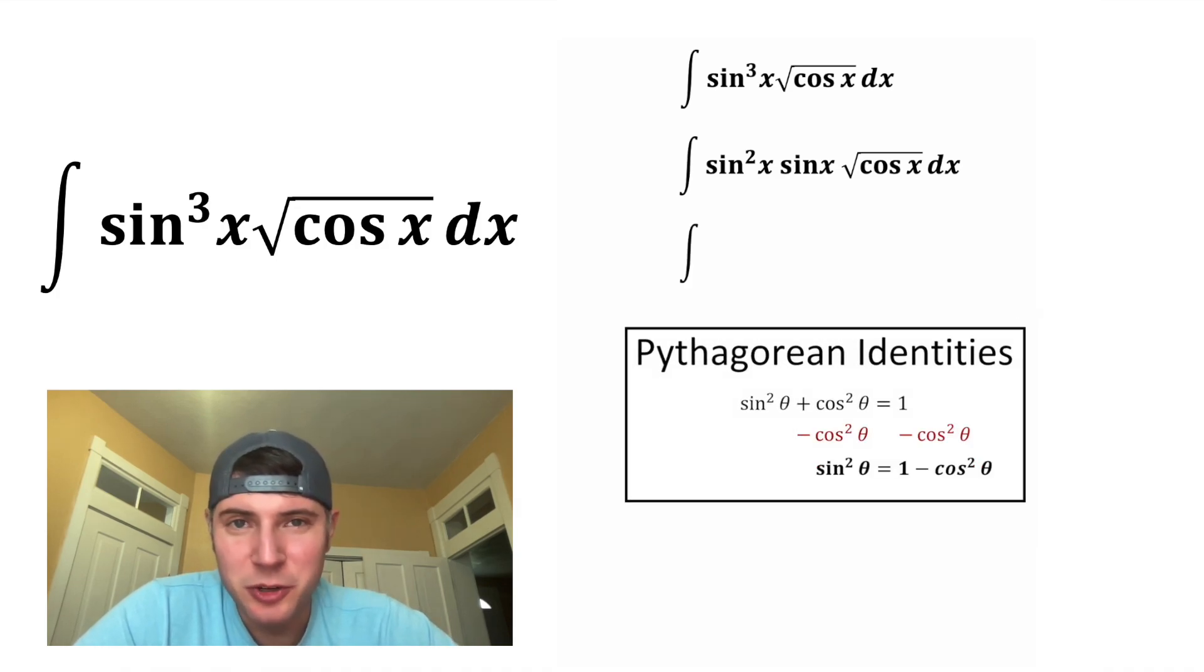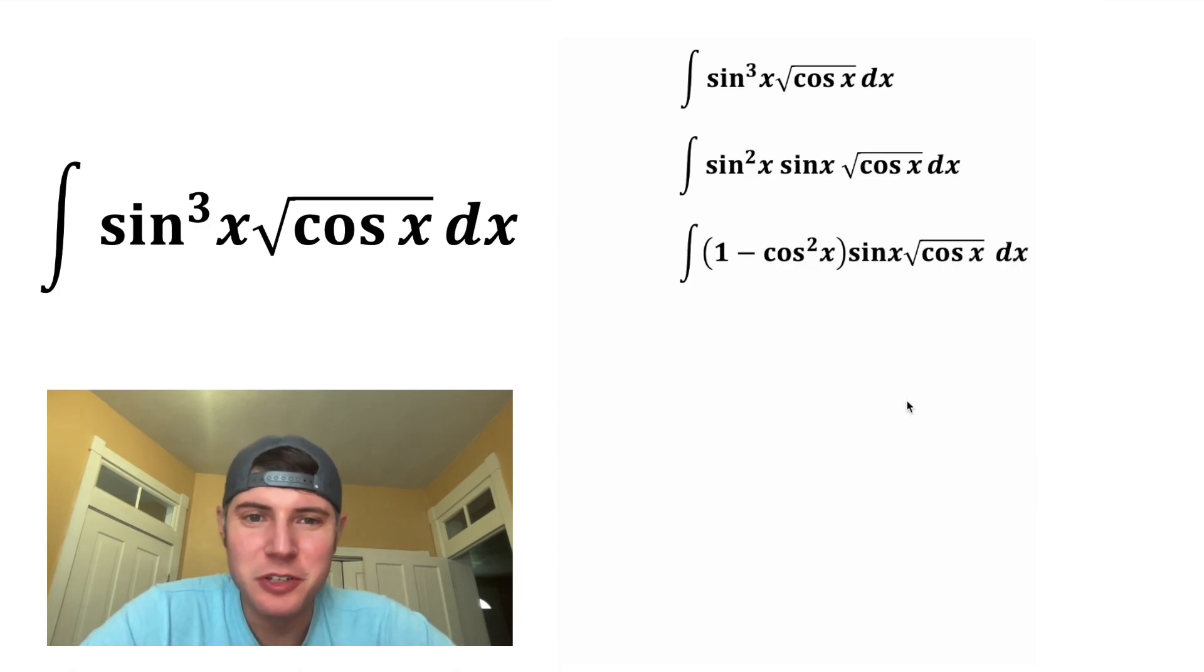After manipulating sine squared plus cosine squared equals one, we can see that sine squared is equal to one minus cosine squared. So I'm going to substitute for the sine squared, a one minus cosine squared. So now we're ready for some u substitution.